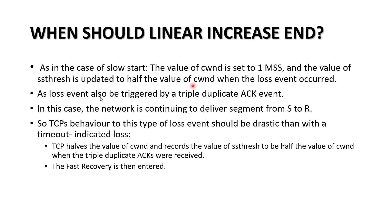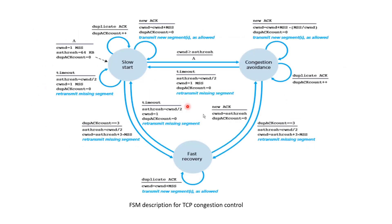So in congestion avoidance, the congestion window increases by 1/10 MSS per ACK. Where does this increment end? We will discuss this using the FSM. In the initial condition, CWND is set to 1 MSS, SSThresh is set to some value, and duplicate count is 0. As slow start increases, bandwidth is probed and packet numbers increase, and the congestion window gets increased. In congestion avoidance, it increases by MSS divided by CWND.